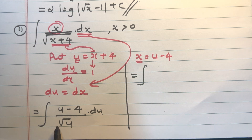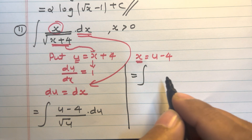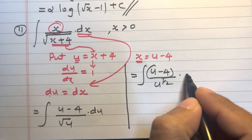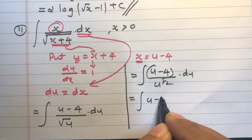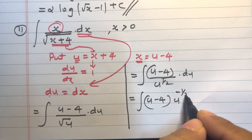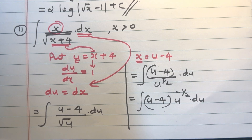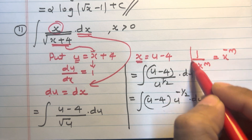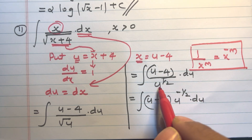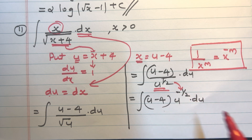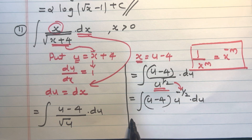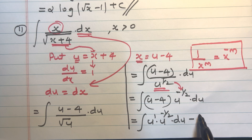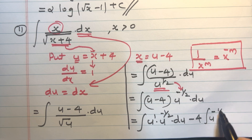Separating the division, root u is u raised to 1 by 2, so we have (u minus 4) divided by u raised to 1 by 2 into du. That equals integral of (u minus 4) into u raised to minus 1 by 2 du, using the exponential law that 1 by x raised to m equals x raised to minus m. Opening the bracket: integral of u raised to 1 into u raised to minus 1 by 2 minus 4 integral of u raised to minus 1 by 2 into du.